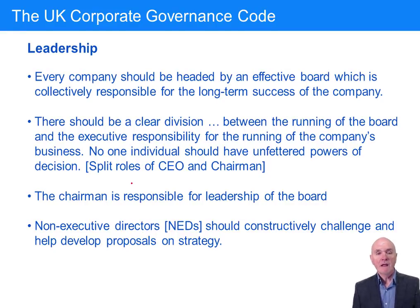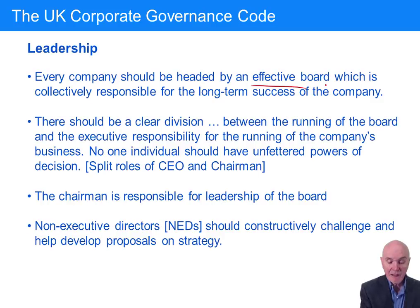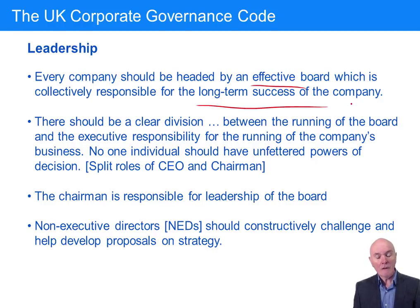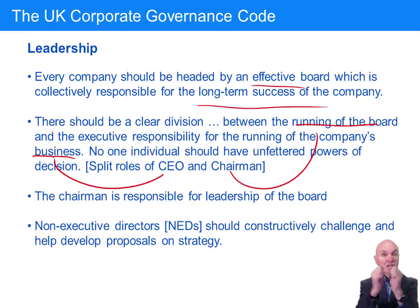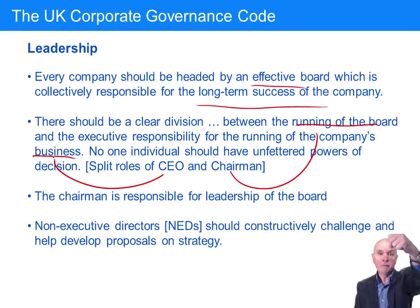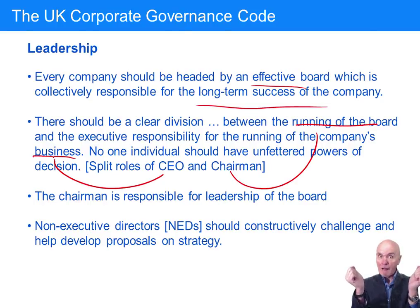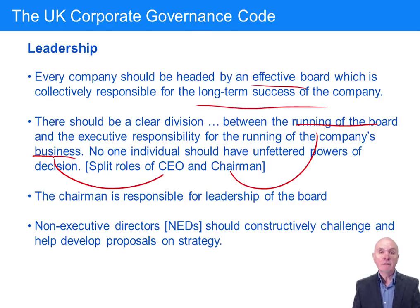On leadership, every company should be headed by an effective board responsible for the long-term success of the company. Very importantly, there should be a division between running the board and running the company's business. The person who runs the board is the chairman; the person who runs the business is the chief executive officer, and they should be separate people. One of the problems with WorldCom and Enron was one very powerful person at the top who no one would say no to. By splitting the power between chairman and CEO, you dilute one person's power and share it.